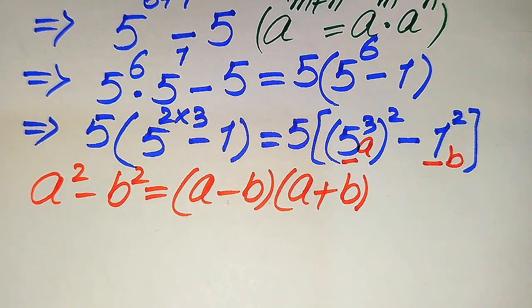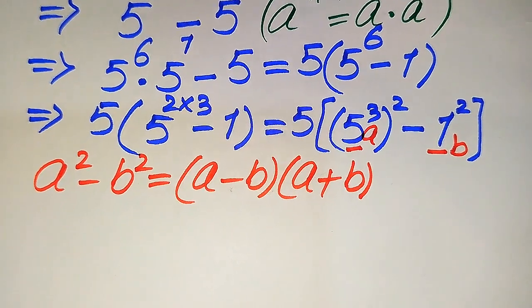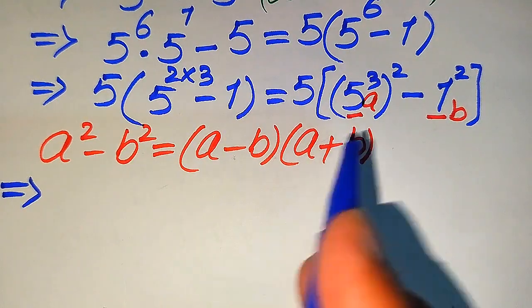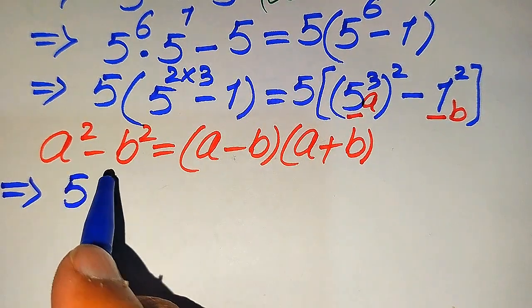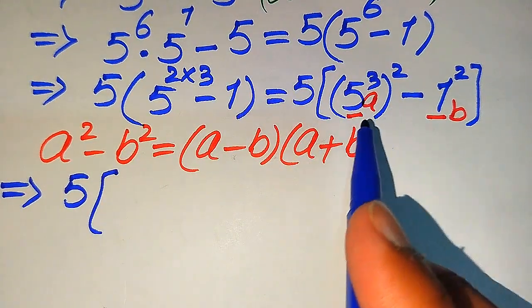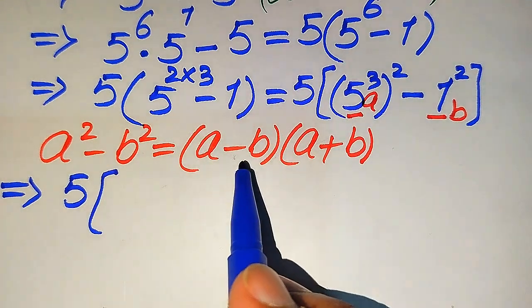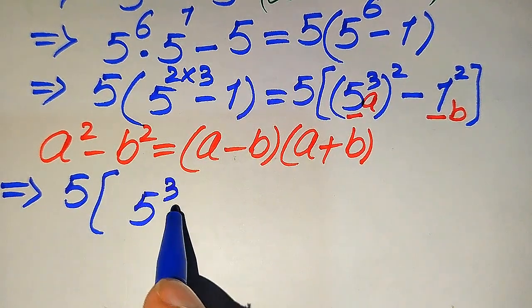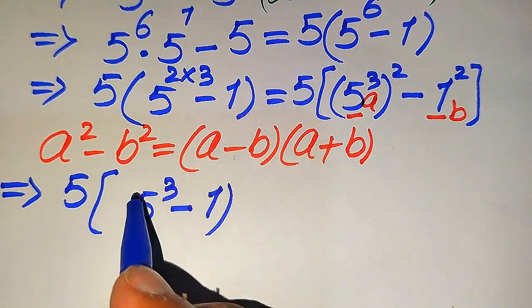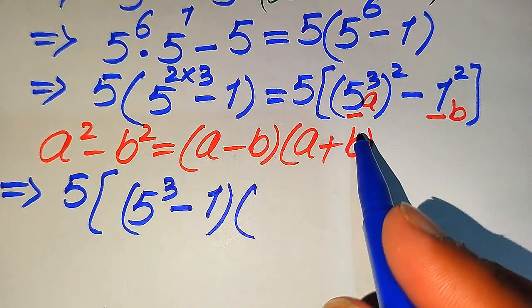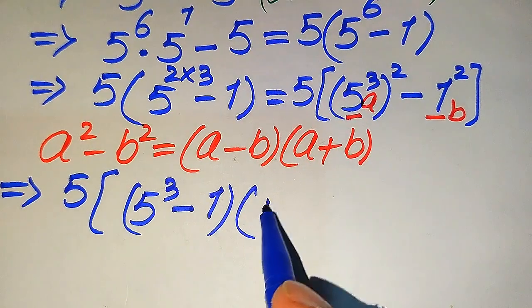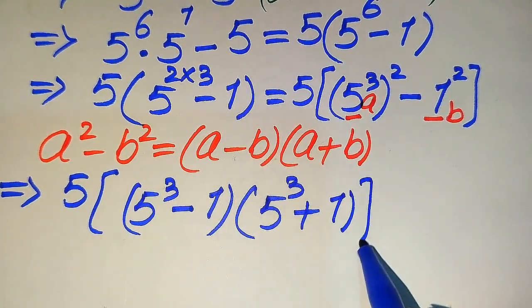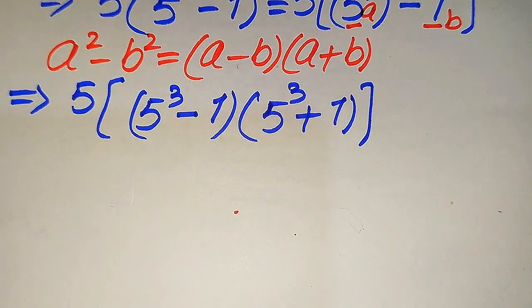Here the base of the first term is our a and the base of the second term is our b. Applying the difference of squares formula, we write the expression as 5 times (5 cubed minus 1) times (5 cubed plus 1).